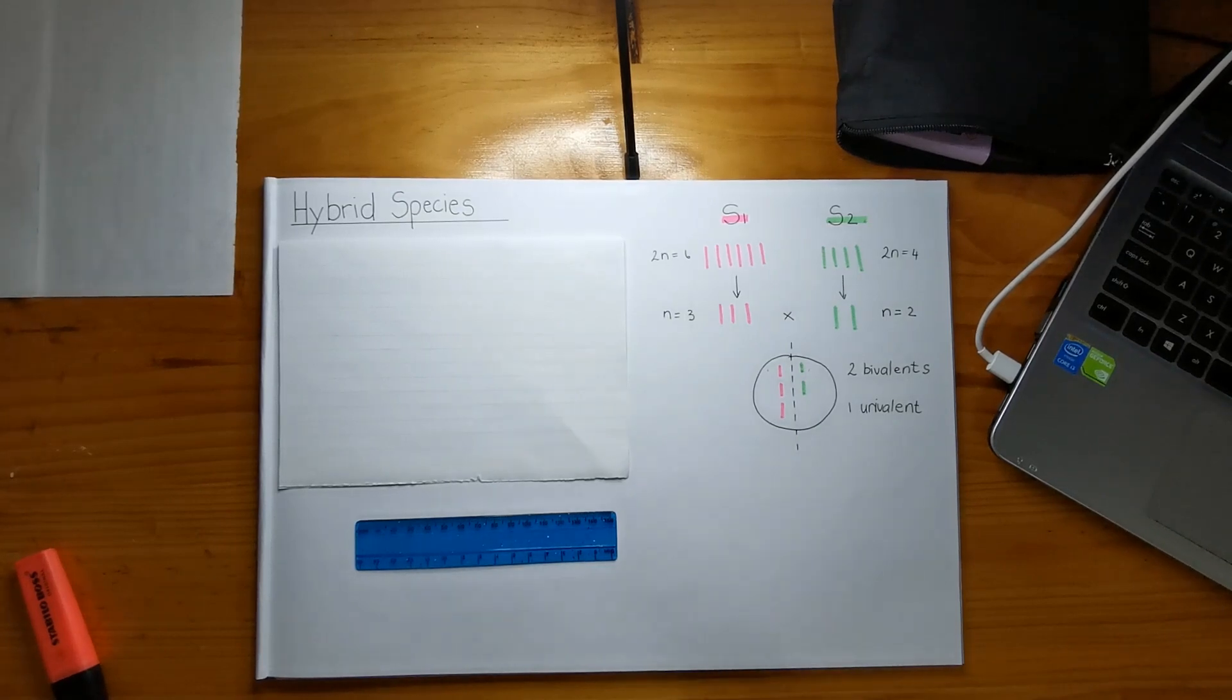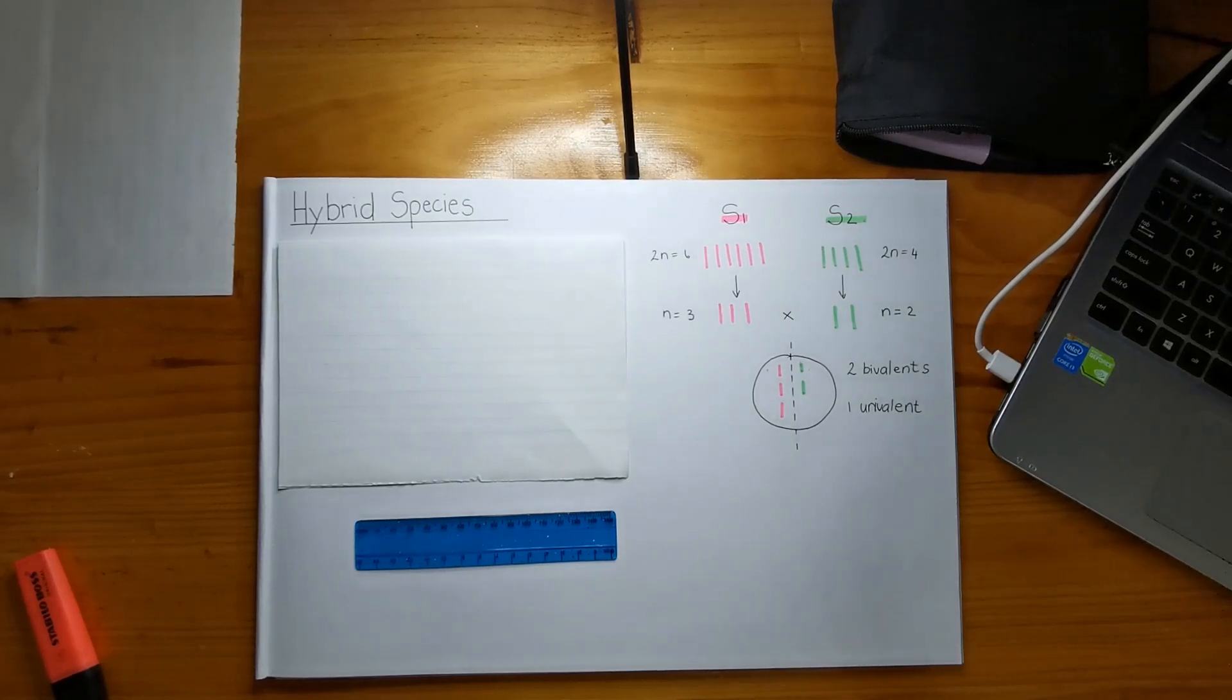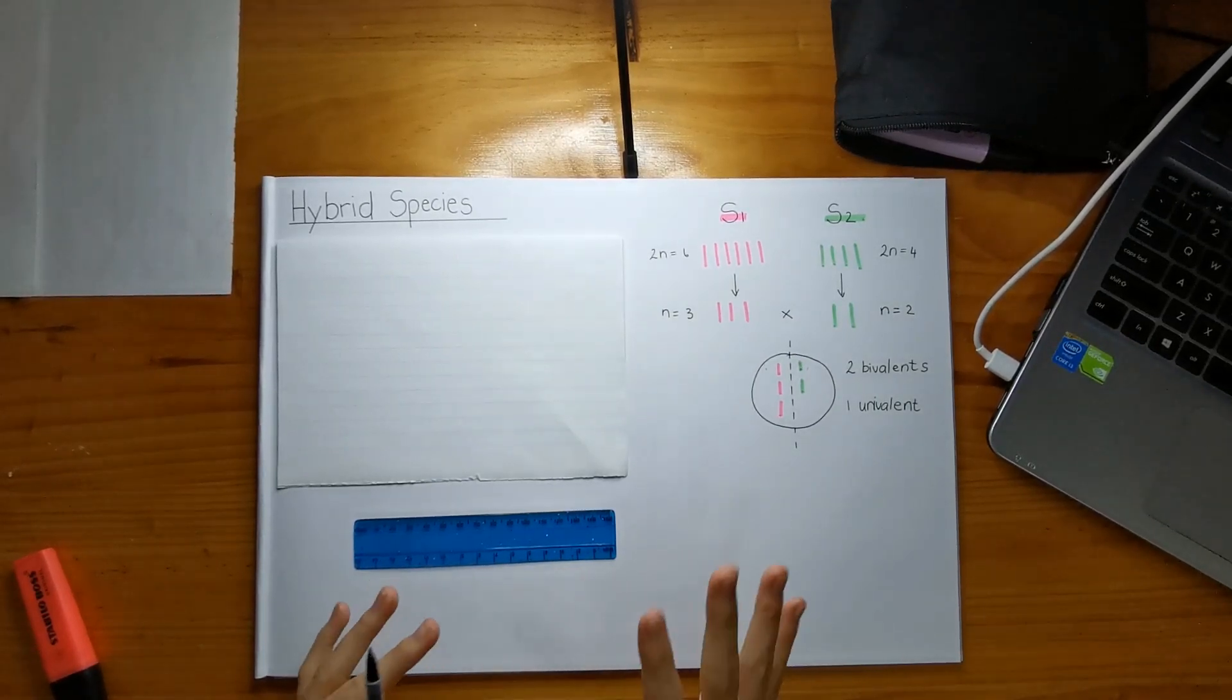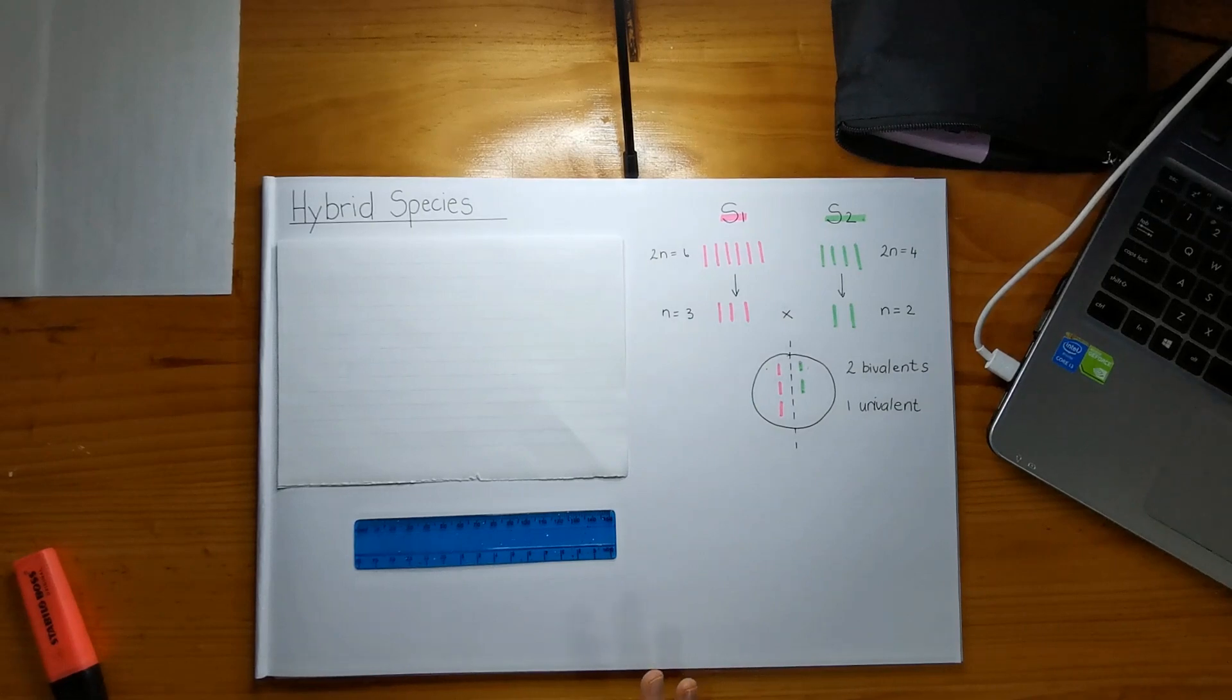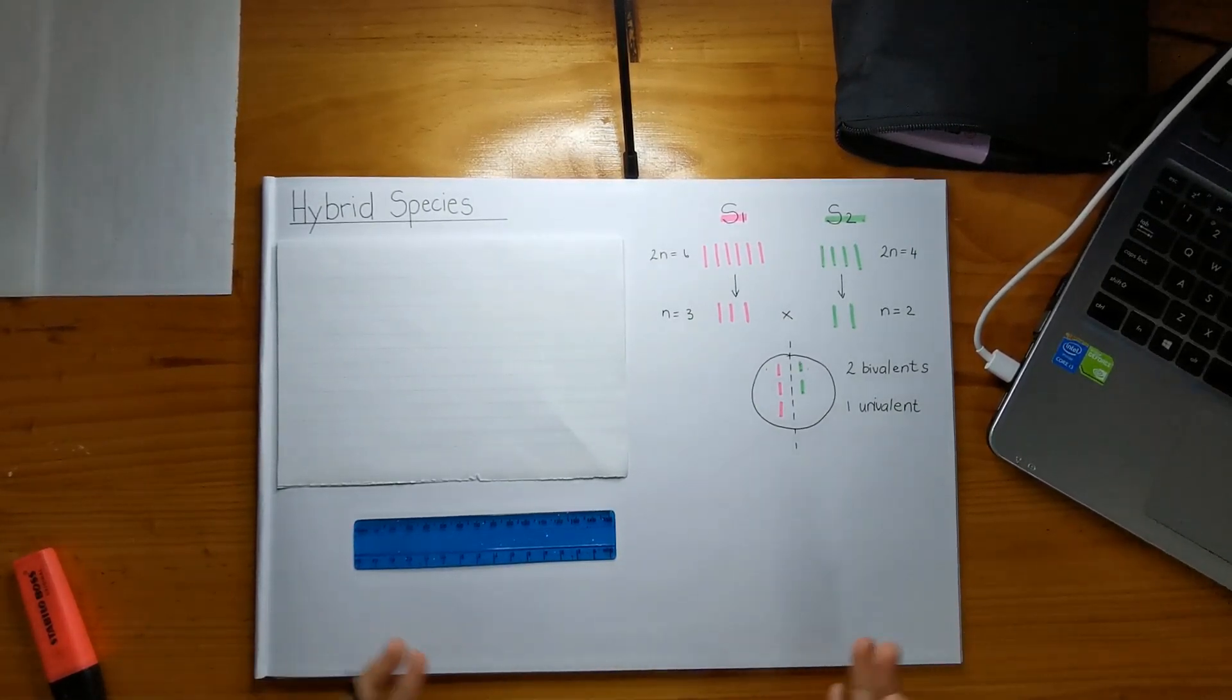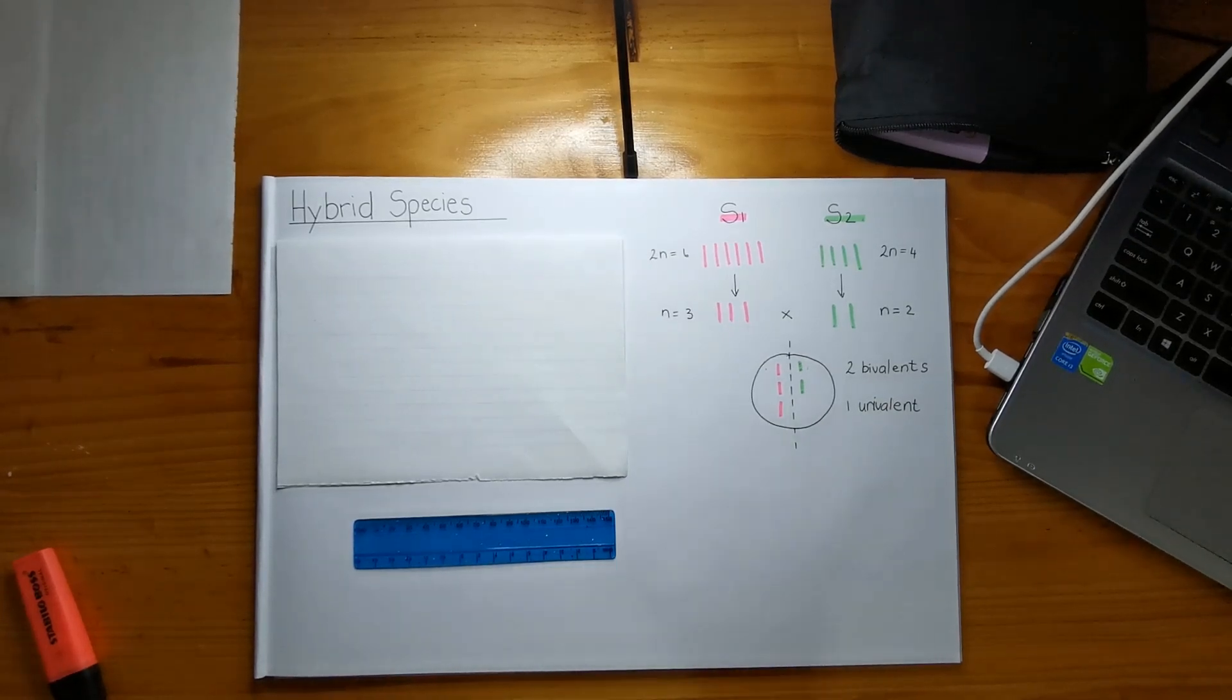Okay, hopefully you've done that. So what they kind of want to do is they've given you crosses of these like really weirdly named species, and they've told you how many bivalents and univalents the hybrids have, but they haven't told you the somatic number, which is their diploid numbers for each of the species involved in the crosses. So that's what we have to kind of work towards getting to, I guess.